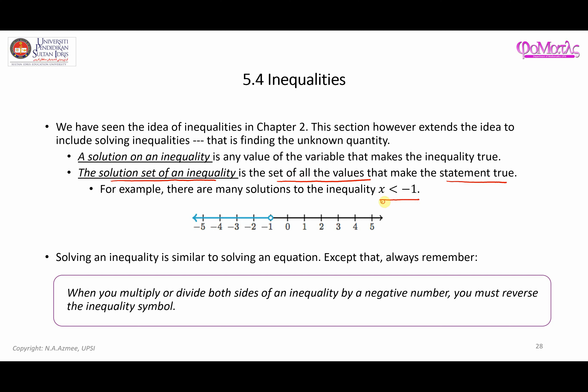For example, this is the inequality problem x less than negative 1. The solution can be easily given in terms of a graph on a real number line. When x is less than negative 1, you are talking about the area starting from negative 1 but not including negative 1 — that's why it is an open circle. So the solution to x can be, for example, negative 3.5 or negative 20.666 — whatever values as long as x is less than negative 1.